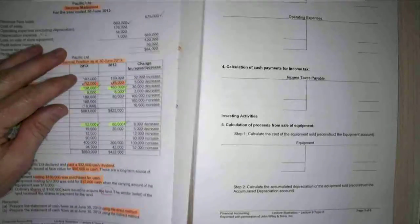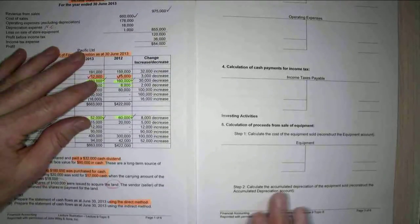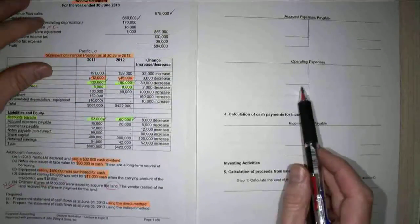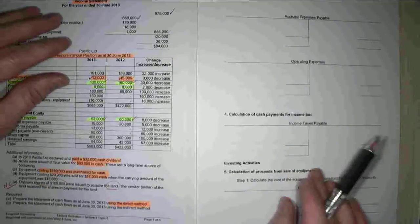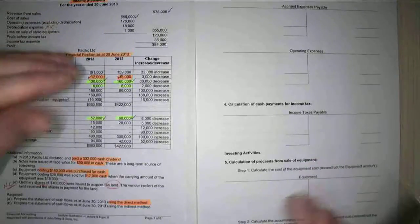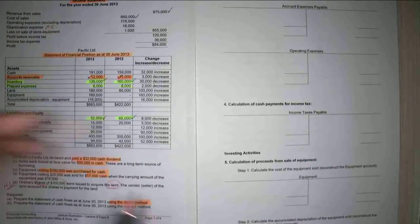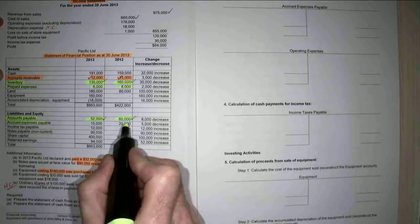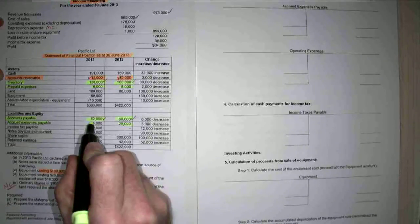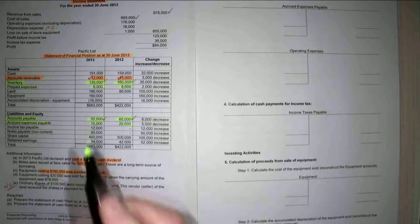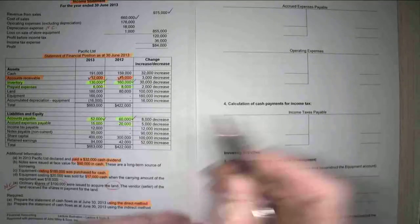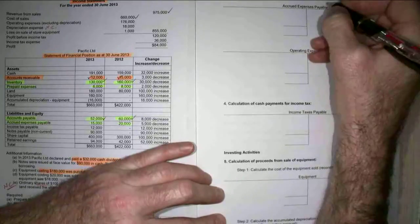Now I'm going to look at my accrued expenses, with the aim that we're going to reconstruct my operating expenses. My accrued expenses are liabilities and I can see them there - accrued expenses payable. I had an opening balance of $20,000 and a closing balance of $15,000. As it is a liability, I know my opening balance must be a credit.